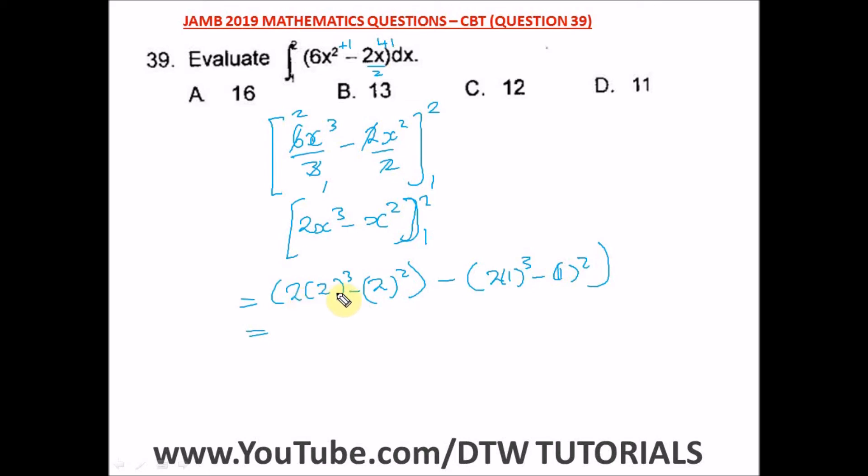From here, 2 raised to power 3 is 8, and times 2 will give us 16 minus 2 raised to power 2, which is 4.